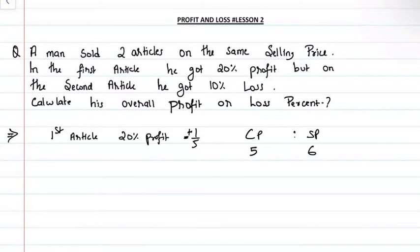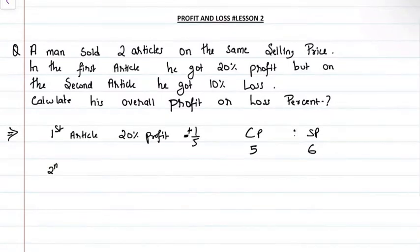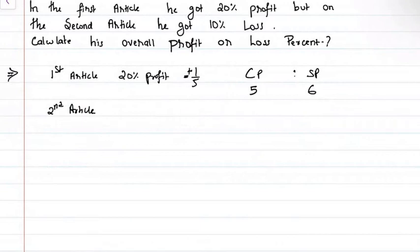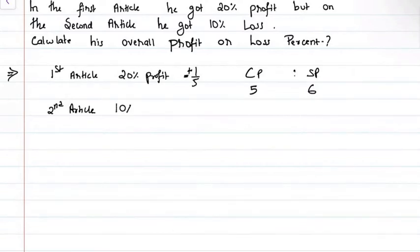For the first article he got profit, and for the second article he got 10% loss. For the second article, 10% loss means the ratio is set accordingly.